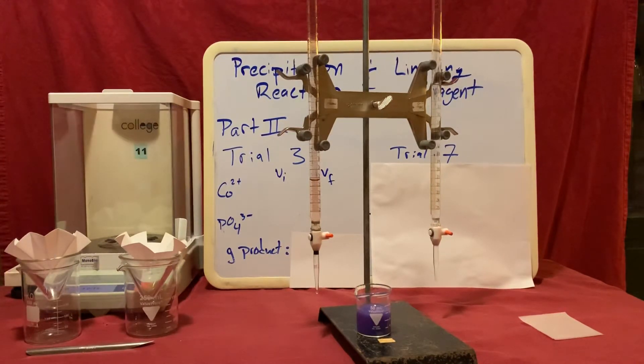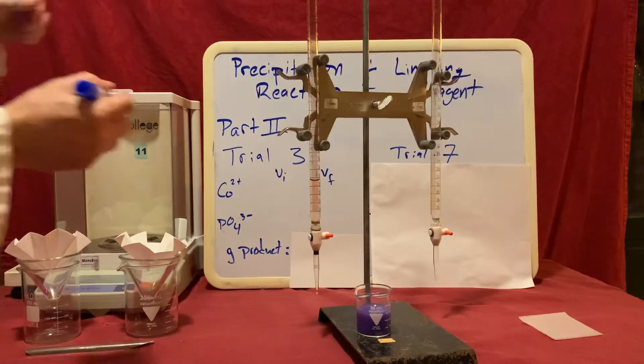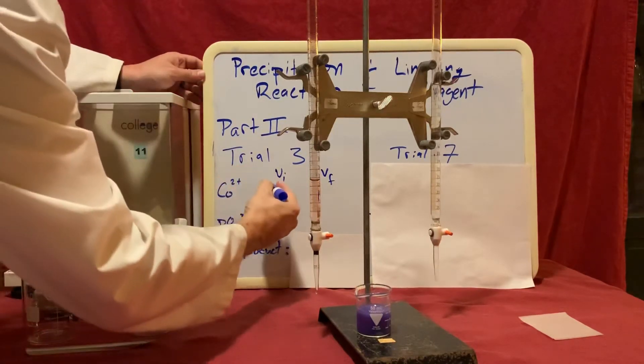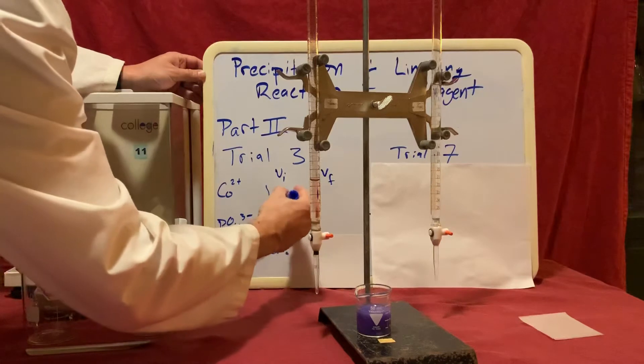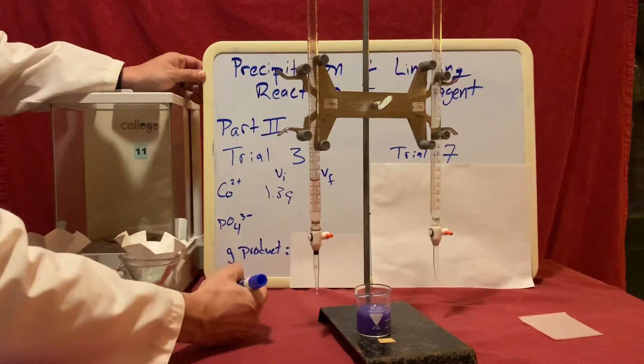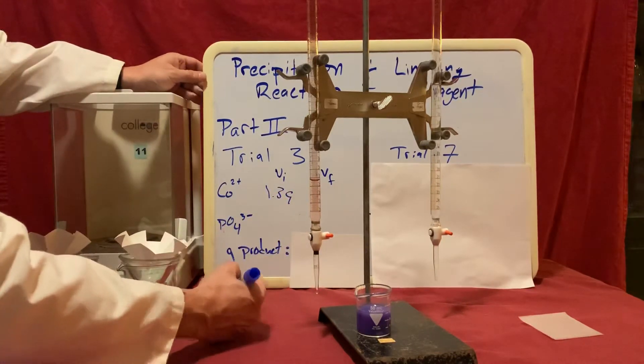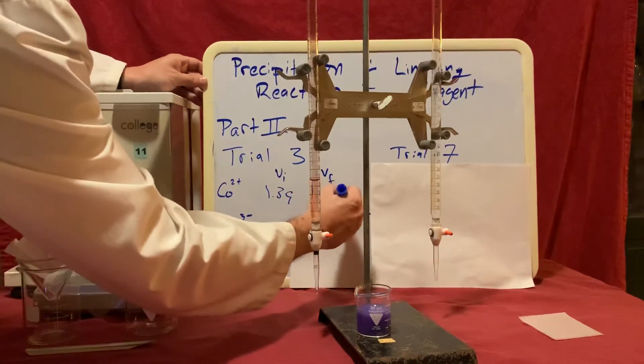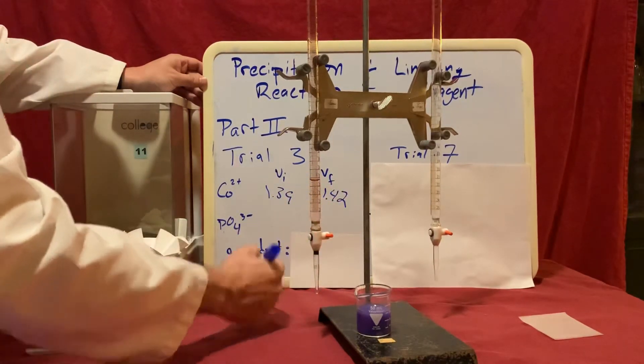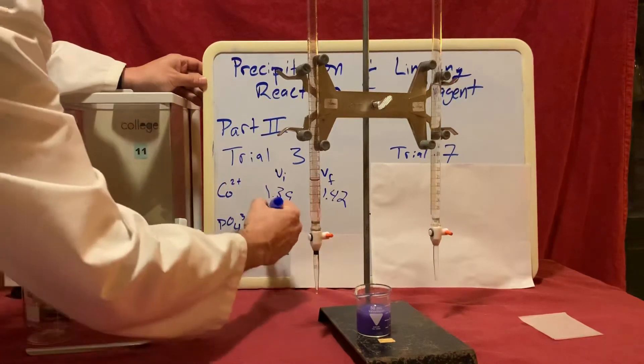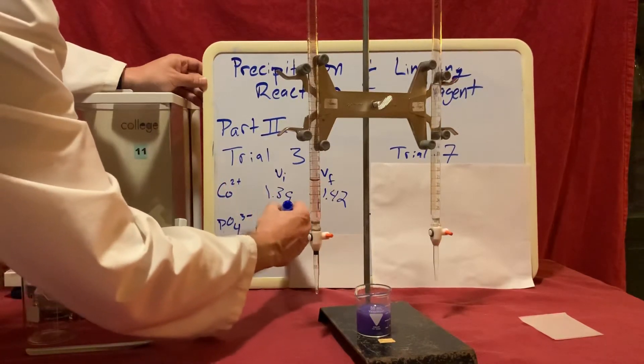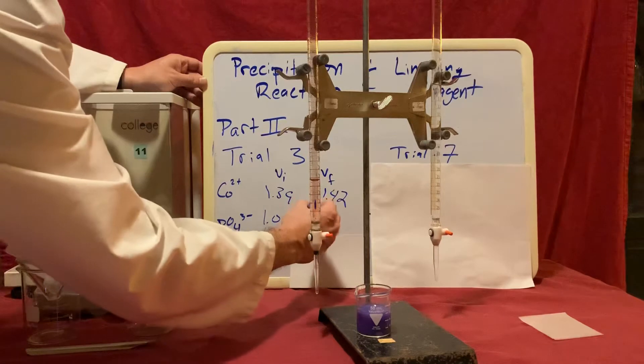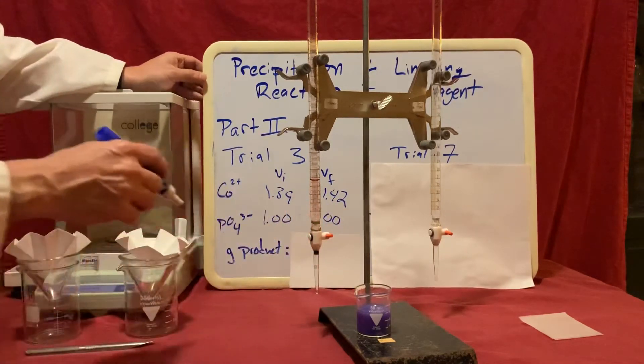I'm going to note down on the board what our volumes were. So we had 1.39 milliliters for our initial volume for our cobalt solution and 21.42 for our final volume. For the phosphate solution, I started off at 1.00 milliliters and I ended very nicely at 9.00 milliliters.